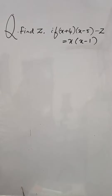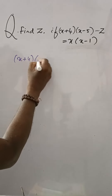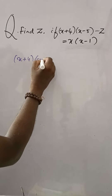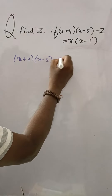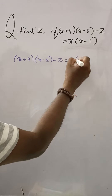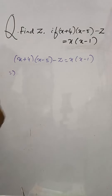Find Z. If X plus 4 into X minus 5 minus Z is equal to X into X minus 1. Here, X plus 4 into X minus 5 minus Z is equal to X into X minus 1.